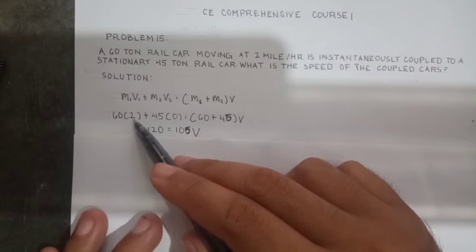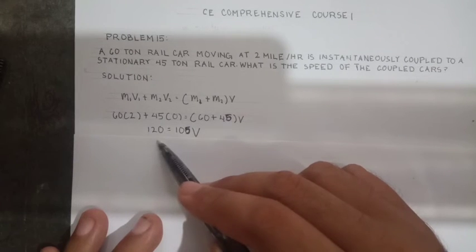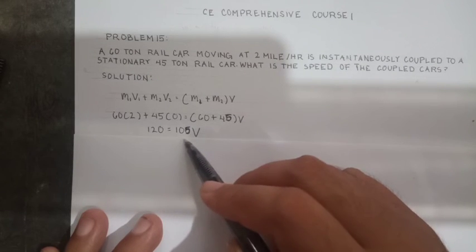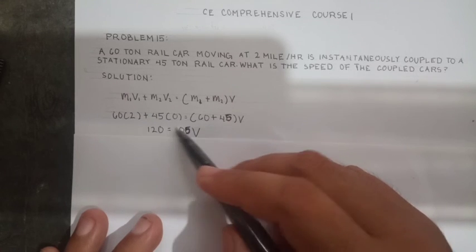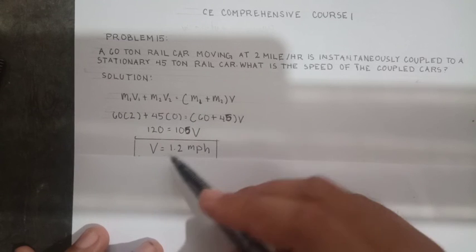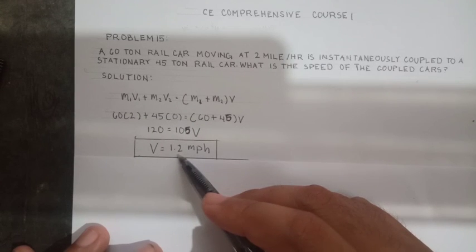So this is 60 times 2 plus 45, which is 120 equals 105. So we just divide 120 over 105 and the answer is 1.2.